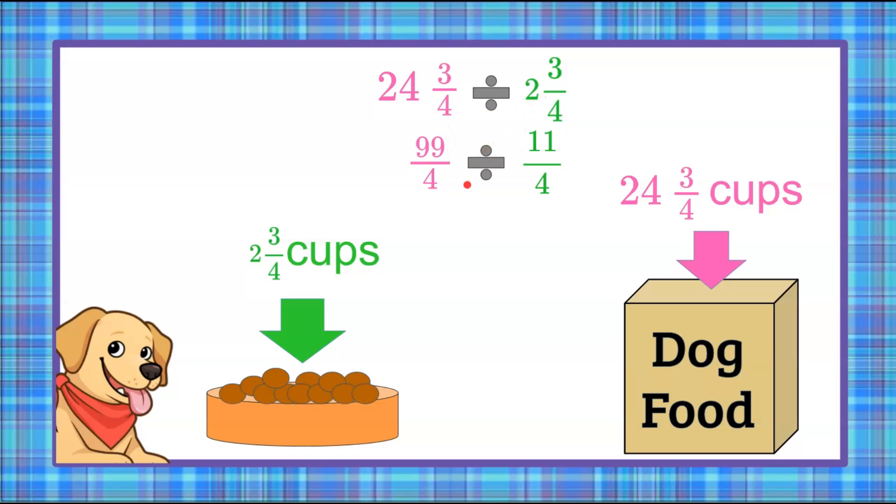To divide, there's two ways to look at this. I like to say mathematically we're going to multiply by the reciprocal. Some teachers teach you keep, change, flip. So we're going to multiply the first value, the 99/4. We're going to change division to multiplication and multiply by the reciprocal. So divide by 11/4 is the same as multiply by 4/11. So the reciprocal is when you flip the numerator and denominator. 4/11 is the reciprocal of 11/4. Keep, change to multiplication, and multiply by the reciprocal or flip.